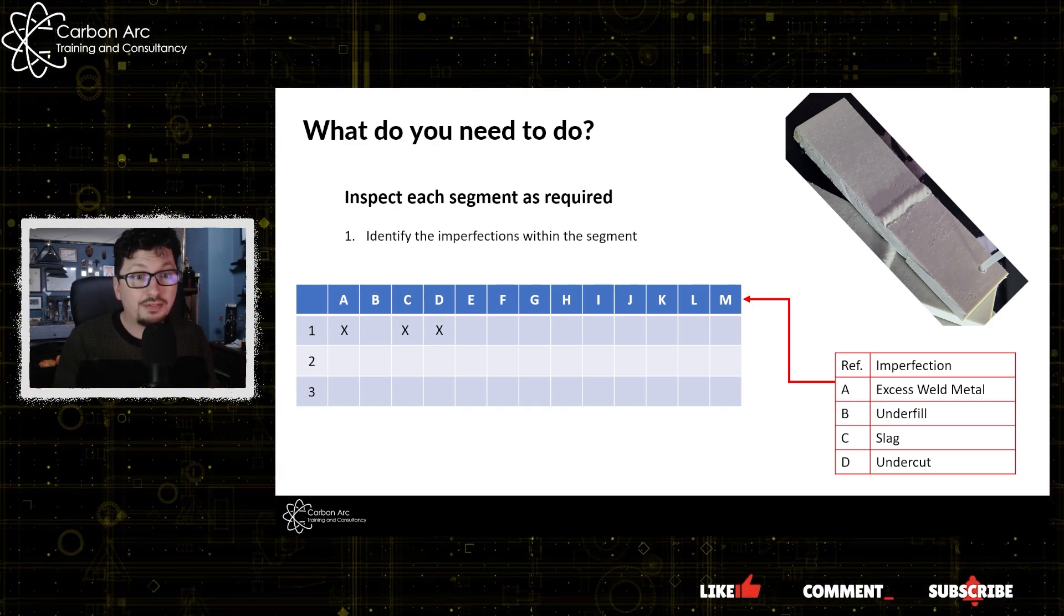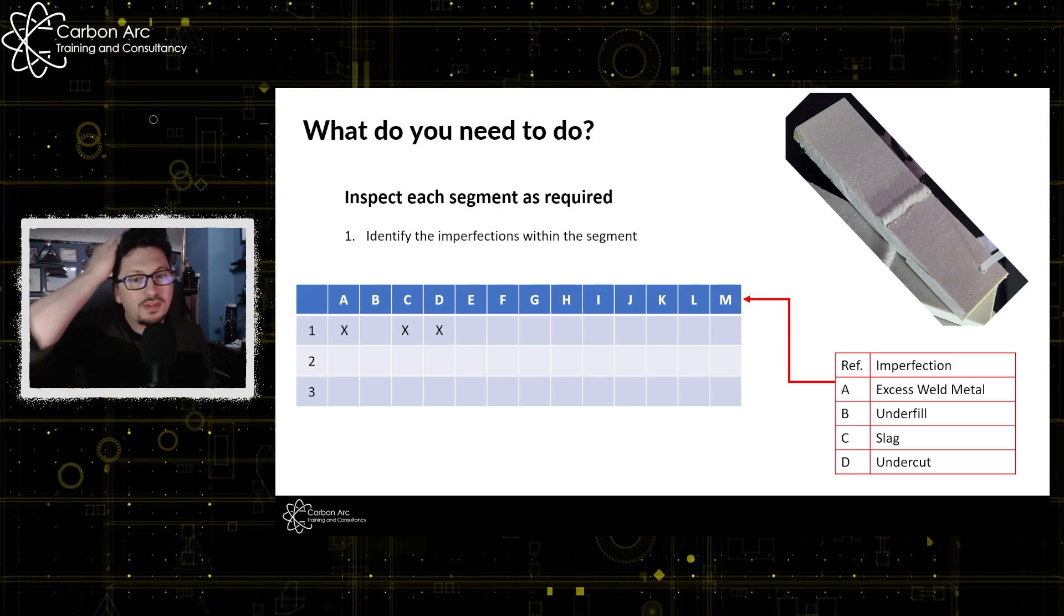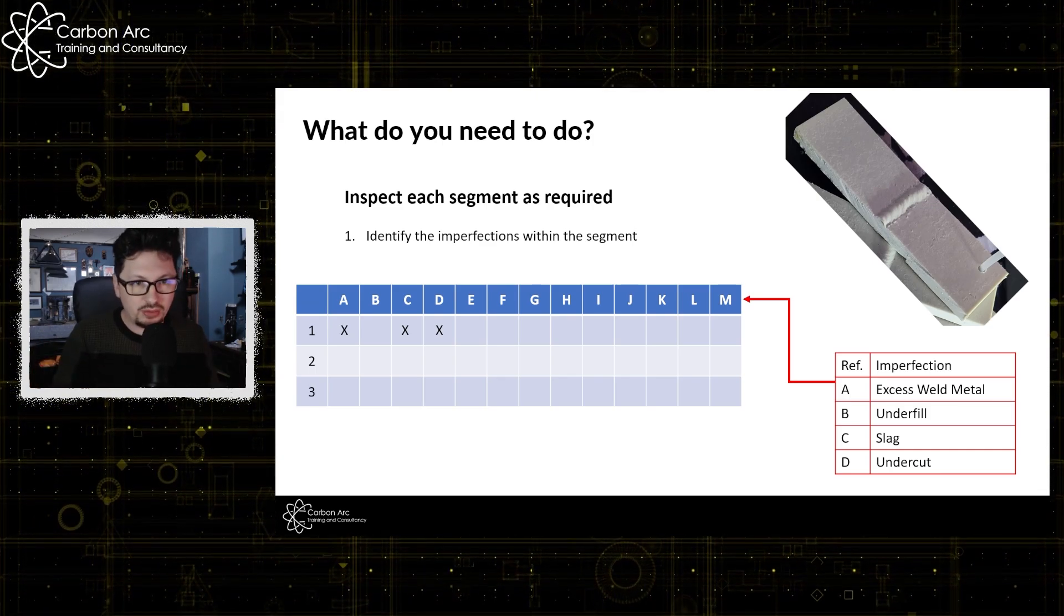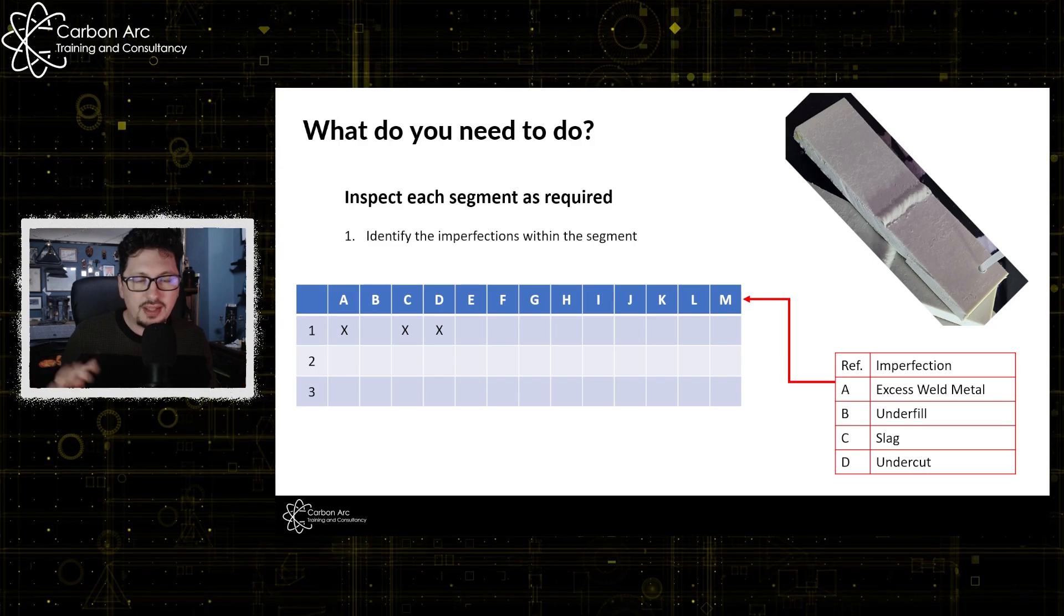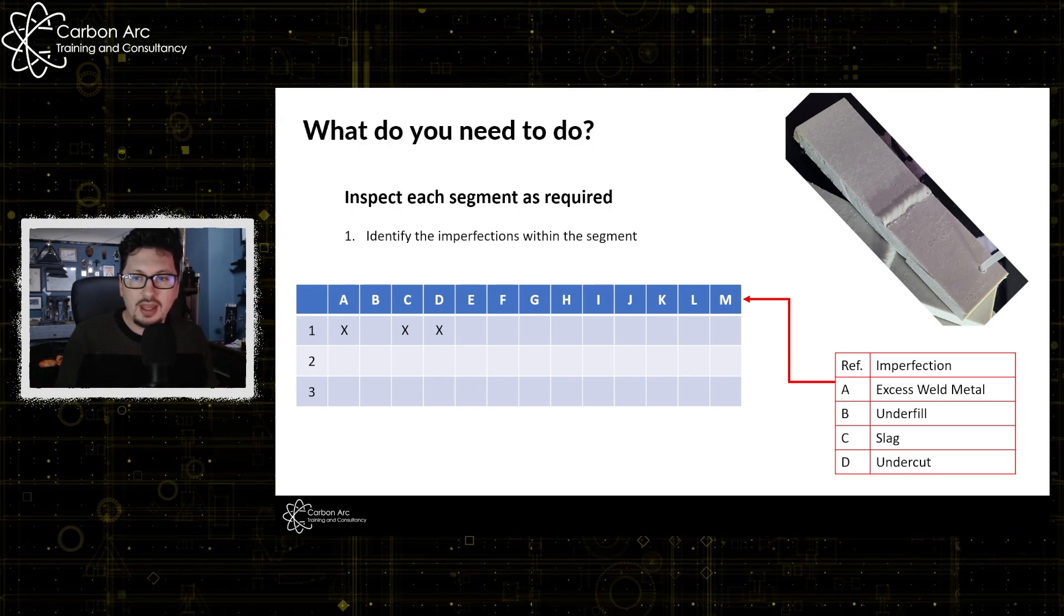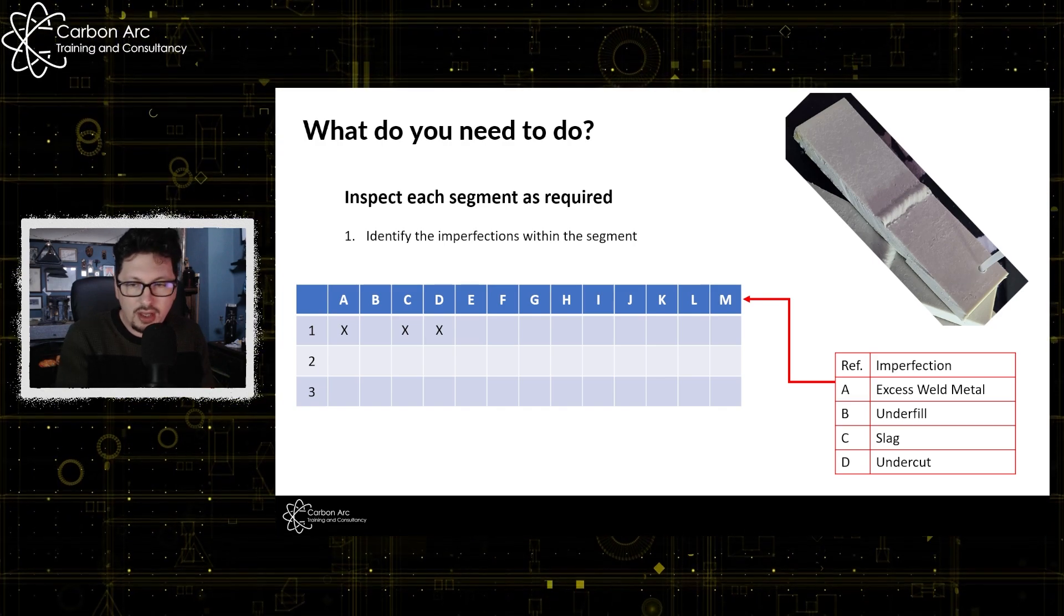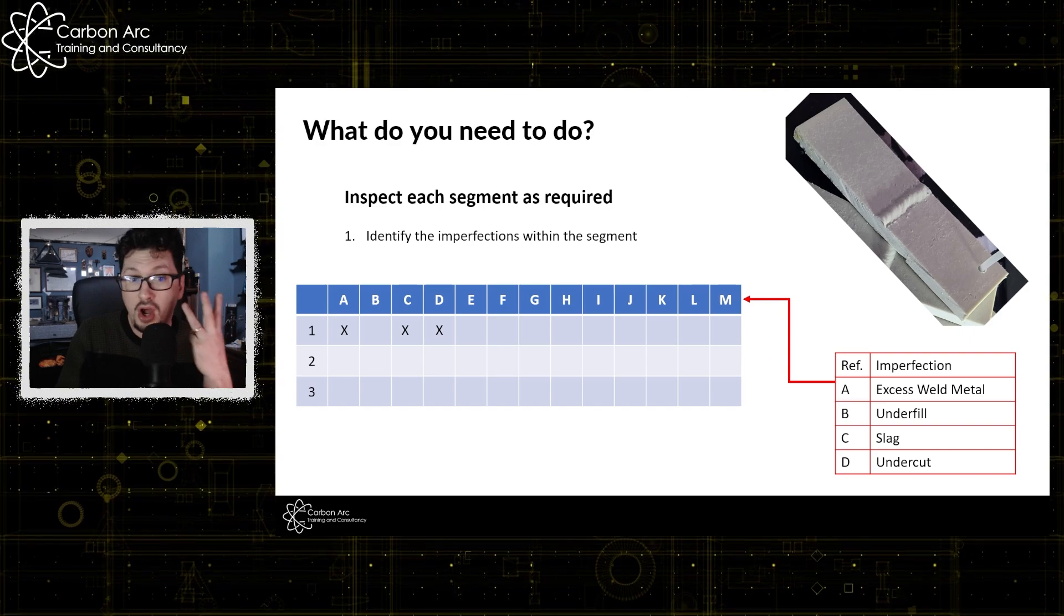Because if we're not, if we go and select, I don't know, we say there's underfill when there isn't, that's minus one mark. So let's say I've got all three defects here or imperfections here. The answer will be, I have excess weld metal, slag, and undercut, which means I get three marks.